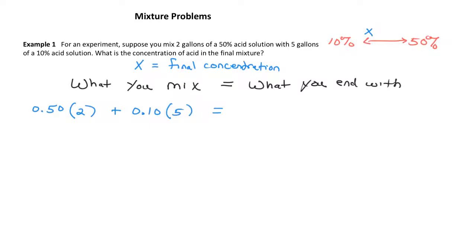Now on the other side of my equation, it's going to be what I end up with. On this side, there were two separate pieces because I had two separate solutions. But on this side, I just want one thing, some percent times some amount. The percent is the thing that I don't know. I'm calling it x. It's going to be some percent times the amount of stuff that I have in total. If I have two gallons of one and five gallons of the other, the total amount of solution is seven gallons, or two plus five.